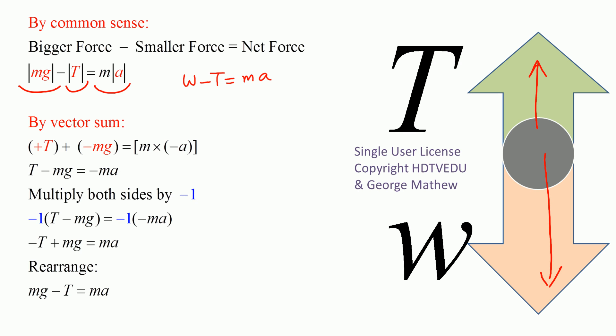Gravitational force mg minus T equals ma. Now let's do the vector sum. Magnitude combined with direction gives you a vector. Tension is pointing up along positive y, so that is positive T. Gravitational force is pointing along negative y, so it is negative mg. Acceleration is down, so it is m times negative a.